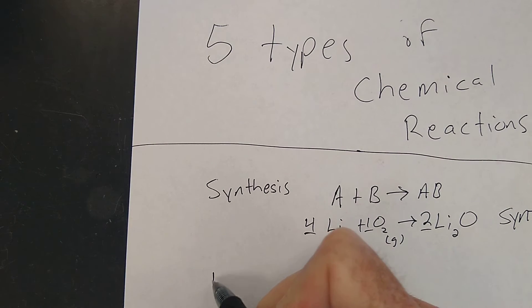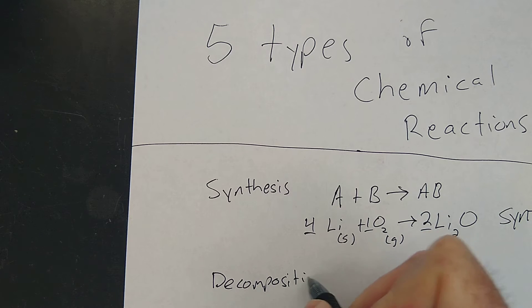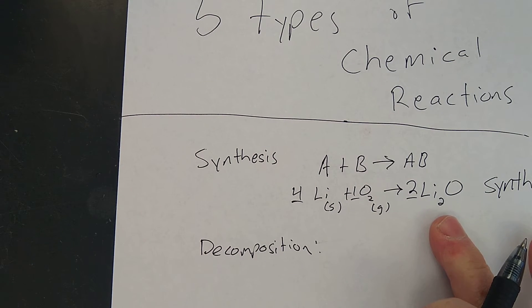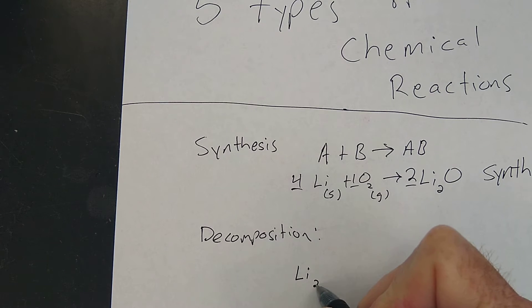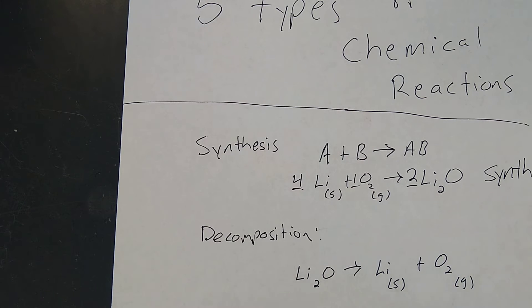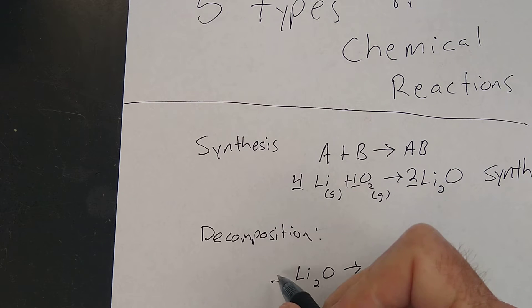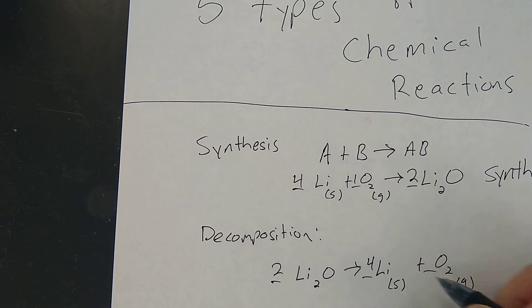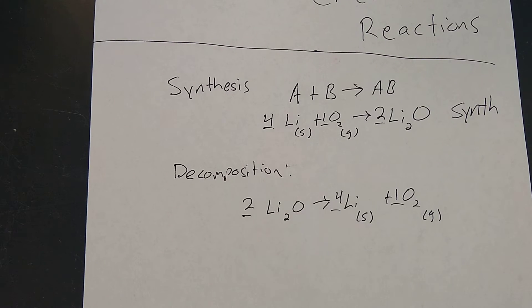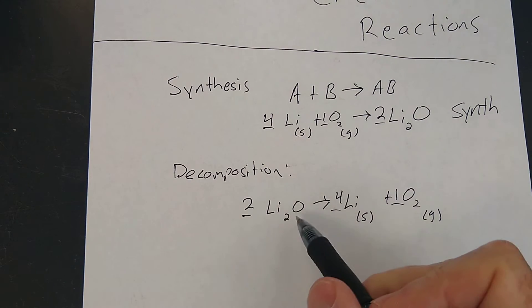Now let's try the next type. The next type is called decomposition. And you know what it means when something decomposes. We could do this reaction in reverse. You could say we had some lithium oxide and it broke down into lithium and oxygen over a long period of time. That's it decomposing. And what do we say? That's 2, 4, 1 in that situation. And that's what it looks like when it's decomposing. So you can make something or you can break something.